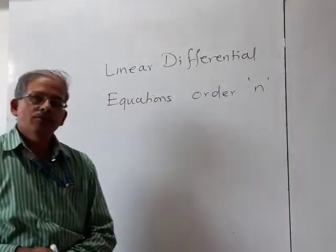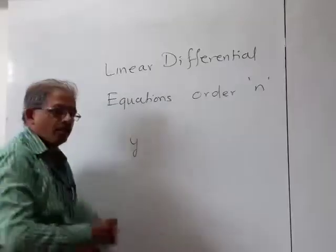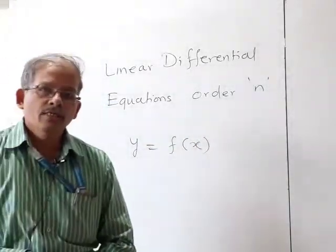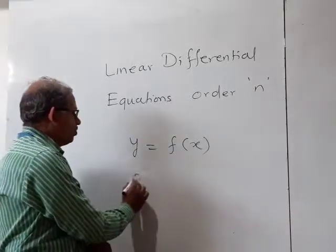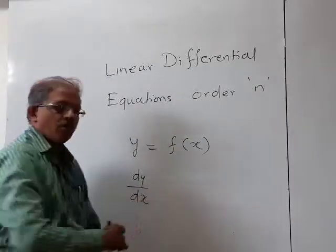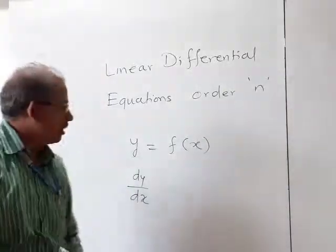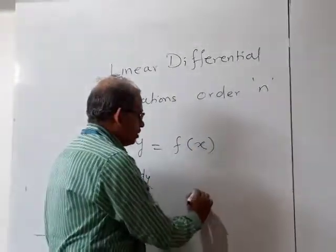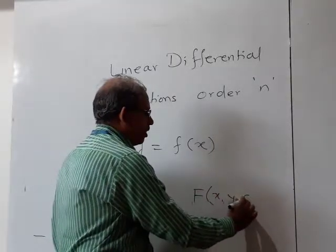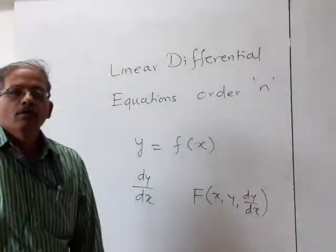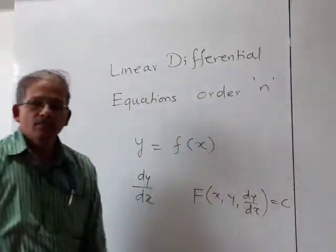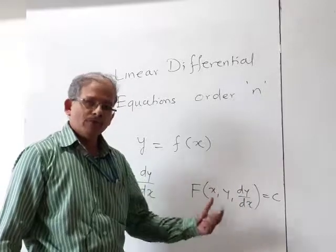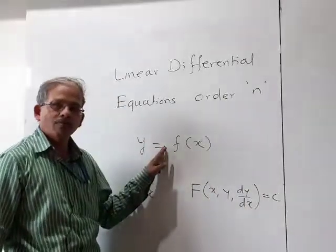If I write a differential equation — suppose I take a function y as a function of variable x — and if I differentiate it once, we get dy by dx. If I relate all three terms together, that is y, x, and dy by dx, and write this function equal to 0, then we say this is a differential equation of first order, because we differentiated y only once.